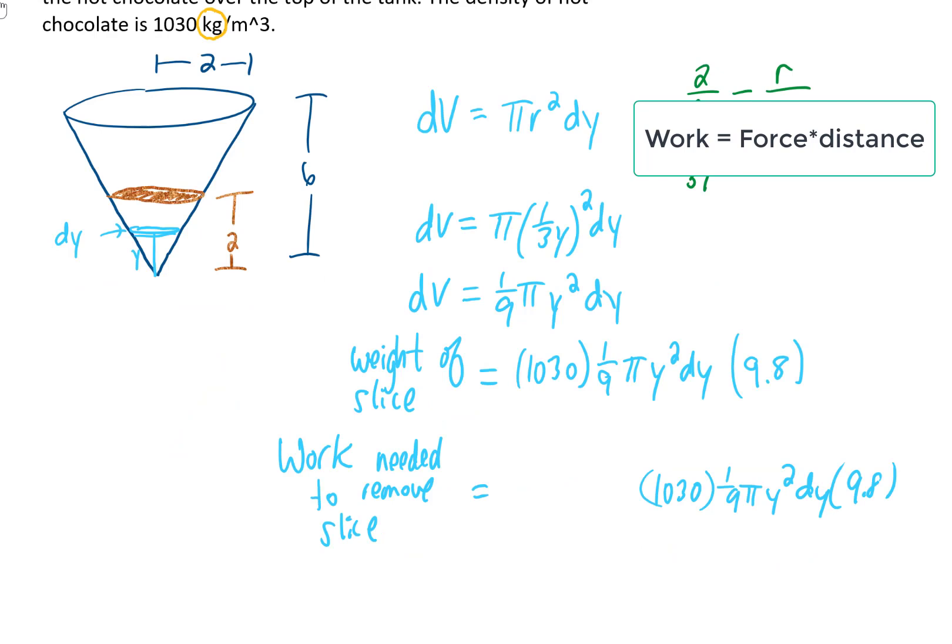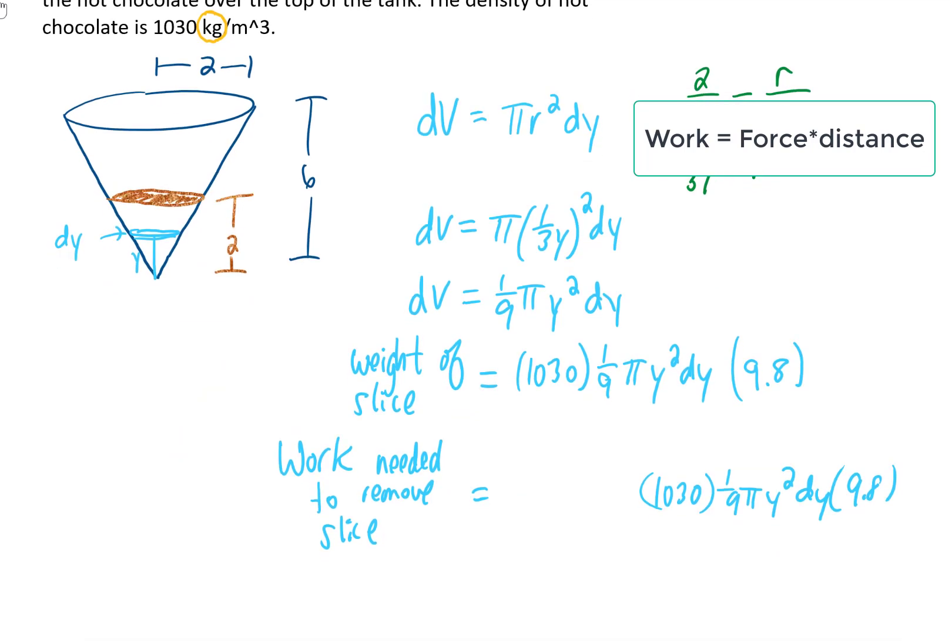So the next question is, what is the work that we need to do to remove that little slice from the cone? The work that we need to do is just the weight of that slice times the distance that we need to lift it out of the cone. And as you can see from the graph, the distance that we need to move that little slice of hot chocolate is just gonna be 6 minus y.